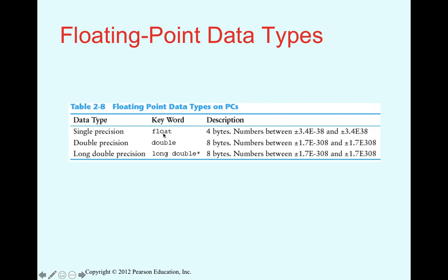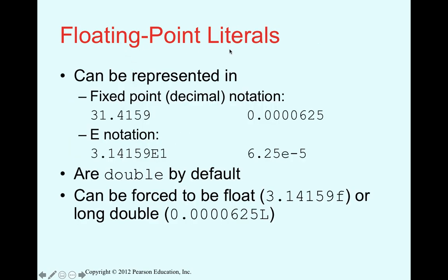Float is four bytes and stores numbers with less precision and a smaller range. Double is eight bytes, offering a much higher precision and range — that's why it's the most commonly used floating point type, just as int is used for integers. Long double offers even more precision, typically 8, 10, or 16 bytes depending on the compiler, but double is usually sufficient.